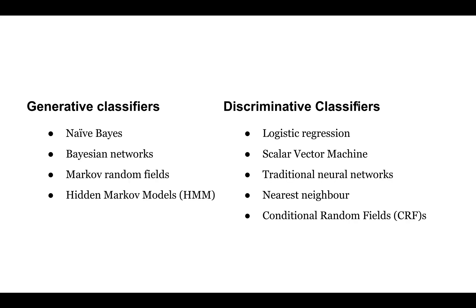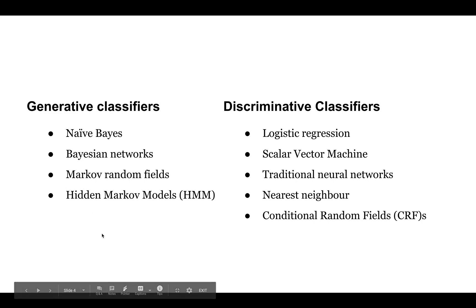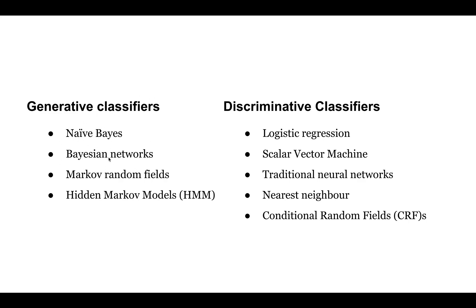For the generative classifier, you think about why a user would need to predict something — using intuition to predict the output. Examples include Naive Bayes, Bayesian networks, hidden Markov models, LSTM, RNN language models, and generative adversarial networks. These are all called generative classifiers or generative models.